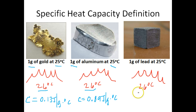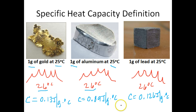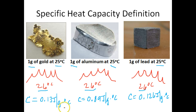Let's look at the lead. If I want to heat one gram of lead up one degree Celsius, this would require 0.126 joules per gram degree Celsius. So if you've got one gram of lead and you want to heat it up one degree Celsius, then this lead will need to absorb 0.126 joules of thermal energy. What you need to know is that metals, which are good conductors of heat, will typically have very low specific heat capacities — and you'll notice gold, aluminum, and lead all have very low specific heat capacities.